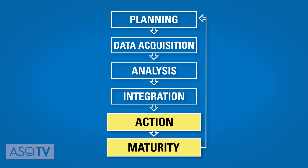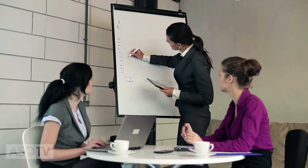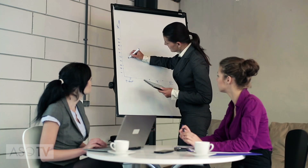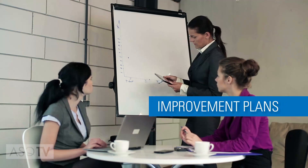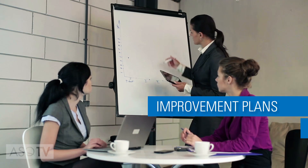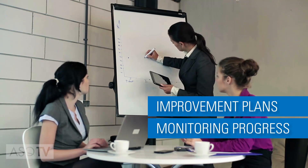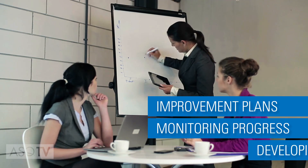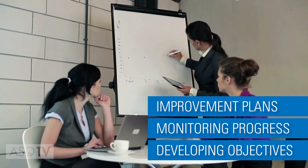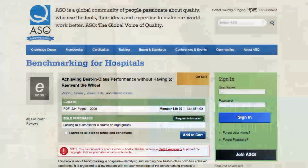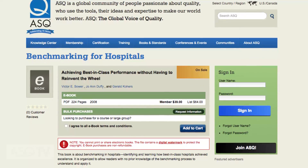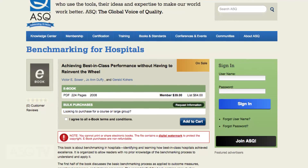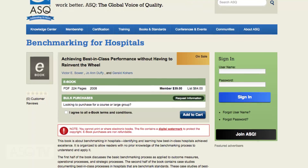Finally, the action and maturity phases round out a benchmarking project. At this point, team members should be developing improvement plans, monitoring employee progress, and developing objectives for continued improvement. To read more from Benchmarking for Hospitals, purchase the e-book at the link below.